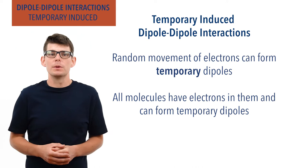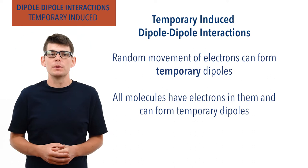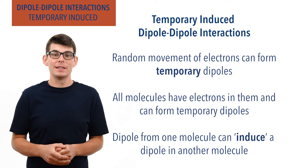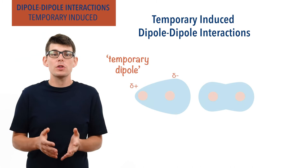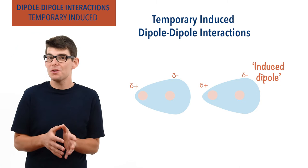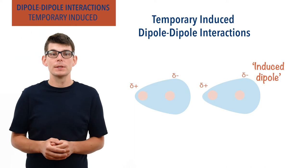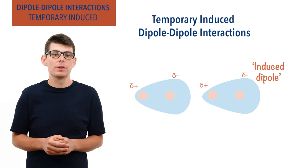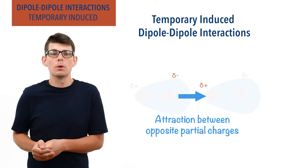If molecules are close enough to each other, a temporary dipole from one molecule can force electrons to move in another molecule and create another dipole. This is called an induced dipole, as it has been forced by another temporary dipole. For example, a partially negative charged end of one molecule can repel electrons in a nearby molecule. The electrons are forced to move, creating a new dipole — leaving the atom closest to the original partial negative charge with a partial positive charge, as electrons have moved away from it. Now, for a very short period of time, there is a partially negative charge and a partially positive charge from different molecules very close to each other, creating a point of attraction between them. This attraction between molecules means the molecules are held together for a very short period of time.